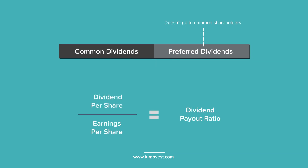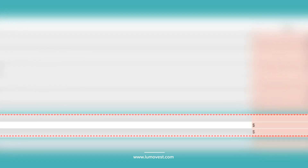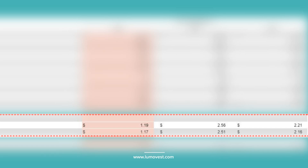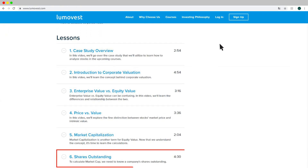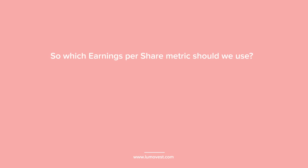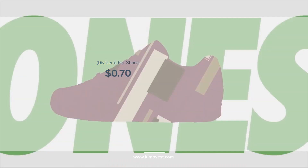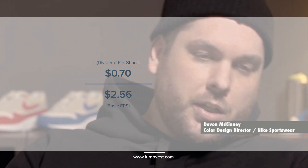If we're evaluating Nike's common stock, we can't use this number because it includes dividend payments that common shareholders won't be entitled to. So we'd have to switch gears and calculate the dividend payout ratio by dividing the dividend per share by the earnings per share. We can find these numbers at the bottom of Nike's income statement. Notice that there are two earnings per share numbers on the income statement: basic and diluted. For the purpose of calculating the dividend payout ratio, we should divide the dividend per share by the basic earnings per share, not the diluted number. In Nike's case, we're dividing $0.70 of dividend per share by the basic earnings per share of $2.56, which is about 27.3%.